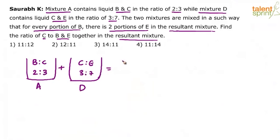These two are mixed to form a resultant mixture. This is the resultant mixture which will have B, C and E of course. Now, what is the ratio? Here is the question basically. B is to C is to E. Once you get B is to C is to E, you can find out what is the ratio of C versus B and E in the final mixture. So let us work on this ratio first of all.